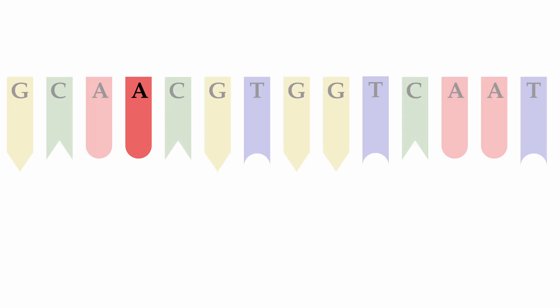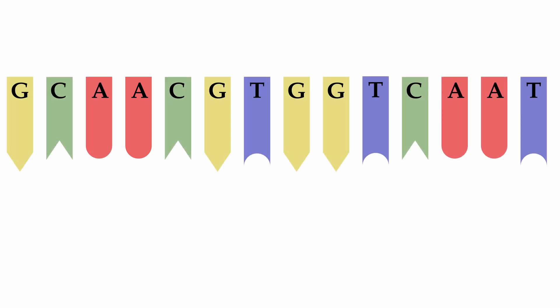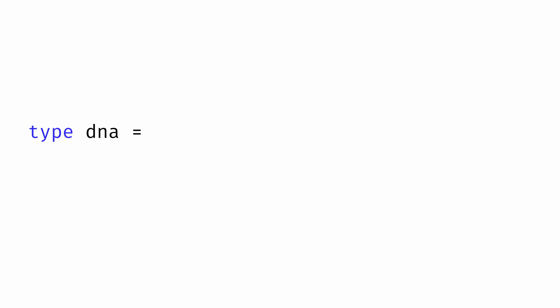But what if we wanted a type to represent a sequence of DNA bases? Taking inspiration from the list type — which could be the empty nil value or the cons of a value and another list — we could similarly define a type for DNA sequences. We'll define a type called DNA as a variant type with two variants: nil and cons. When the variant is cons, we want our DNA sequence to store a particular base as well as a remaining DNA sequence. It turns out that variants in a variant type can take an argument of a specified type, using the 'of' keyword followed by something like base cross DNA.